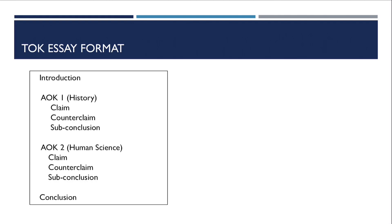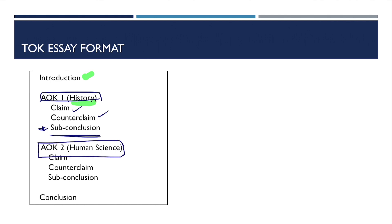Now let's talk about the remaining parts and the essay format. After the introduction, the next section is your first AOK — history. With history, you're going to identify your claim, counterclaim, and subconclusion. The subconclusion is quite important because you're wrapping up what you discussed in the first AOK. After that, you cover your second AOK — human science — again with a claim, counterclaim, and subconclusion. Finally, you finish up with the overall conclusion.